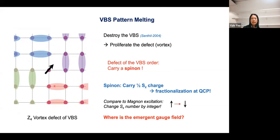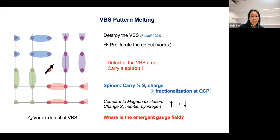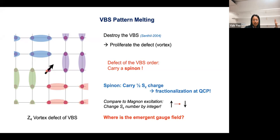A typical topological defect of the valence bond solid is a Z4 vortex, where four distinct dimer patterns form a 2π winding number around the vortex core and meet at a singular point. To destroy the valence bond solid we need to proliferate these topological defects, thereby destroying the VBS order parameter and restoring the spatial symmetry it breaks. The subtlety is that at the core of this vortex there is a free spin-1/2 degree of freedom not paired with any nearby partner — so the vortex carries a spin-on degree of freedom. Proliferating the topological defect means also proliferating these spin-ons decorated inside the vortex core.